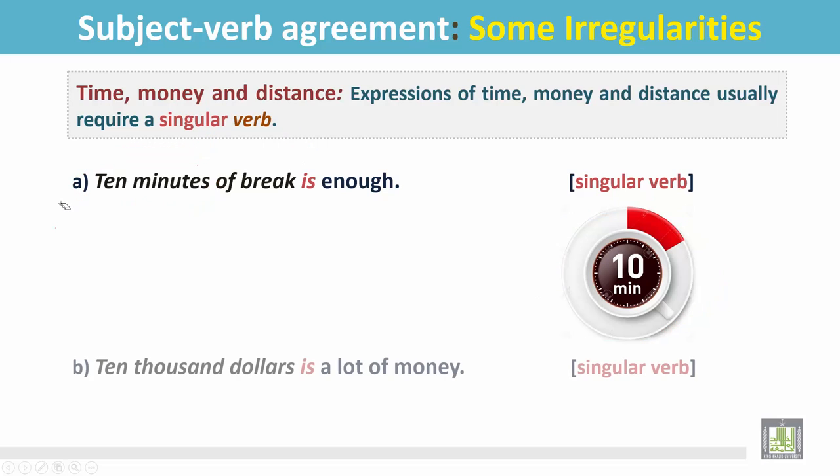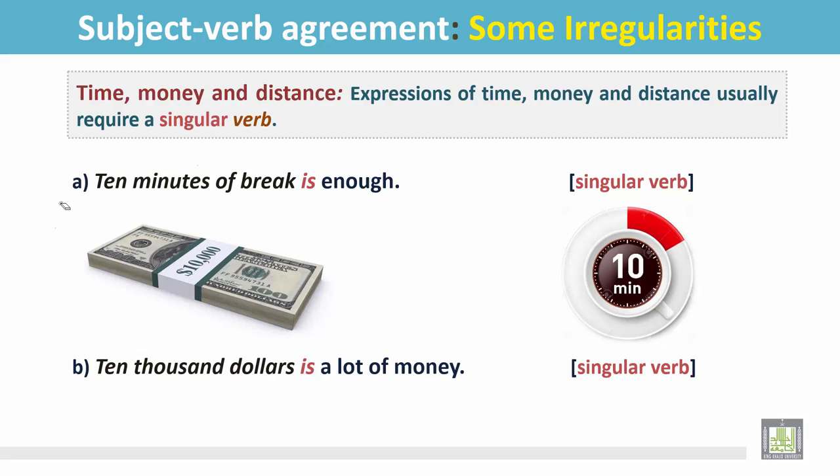Example B: $10,000 is a lot of money. In this picture we see $10,000, but it is a single quantity. It is a singular subject and the verb is singular.